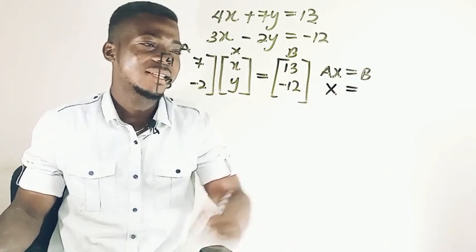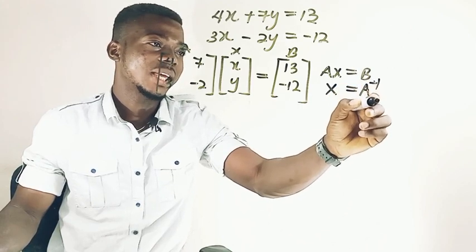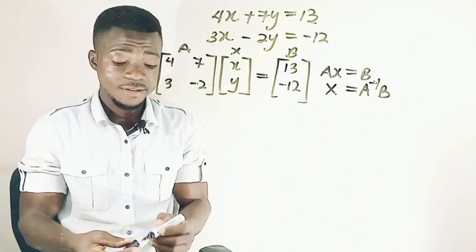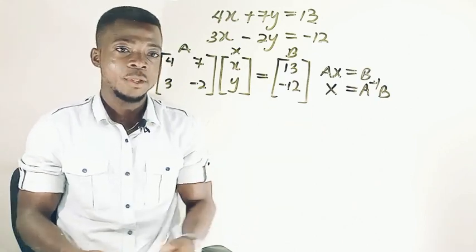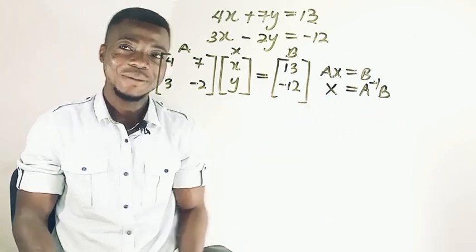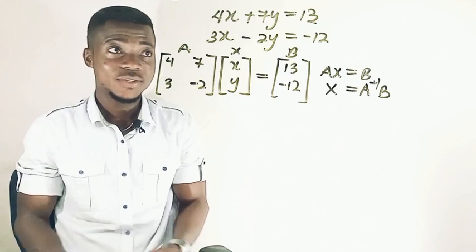Now we'll make X a subject, we're going to have here to be the inverse of A times B. You got it. So the inverse of A times B. So the next thing we have to do is to find the inverse of A, and we multiply that one by the values of B to get our X. So that is it.